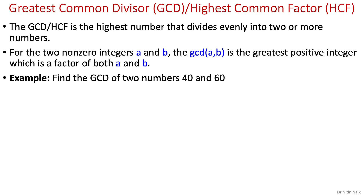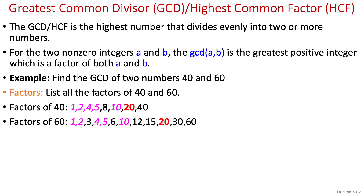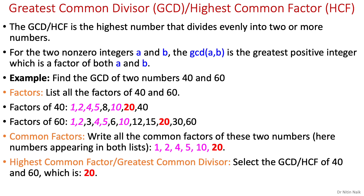We need to find the GCD of two numbers 40 and 60. A simple method is to find the factors of both numbers 40 and 60, select the common factors, then select the GCD. Now we need to select common factors of 40 and 60 which are 1, 2, 4, 5, 10 and 20. Finally, select the highest common factor that is 20, which is the GCD. This method is okay for small numbers but it is not an efficient way to find the GCD of large numbers.